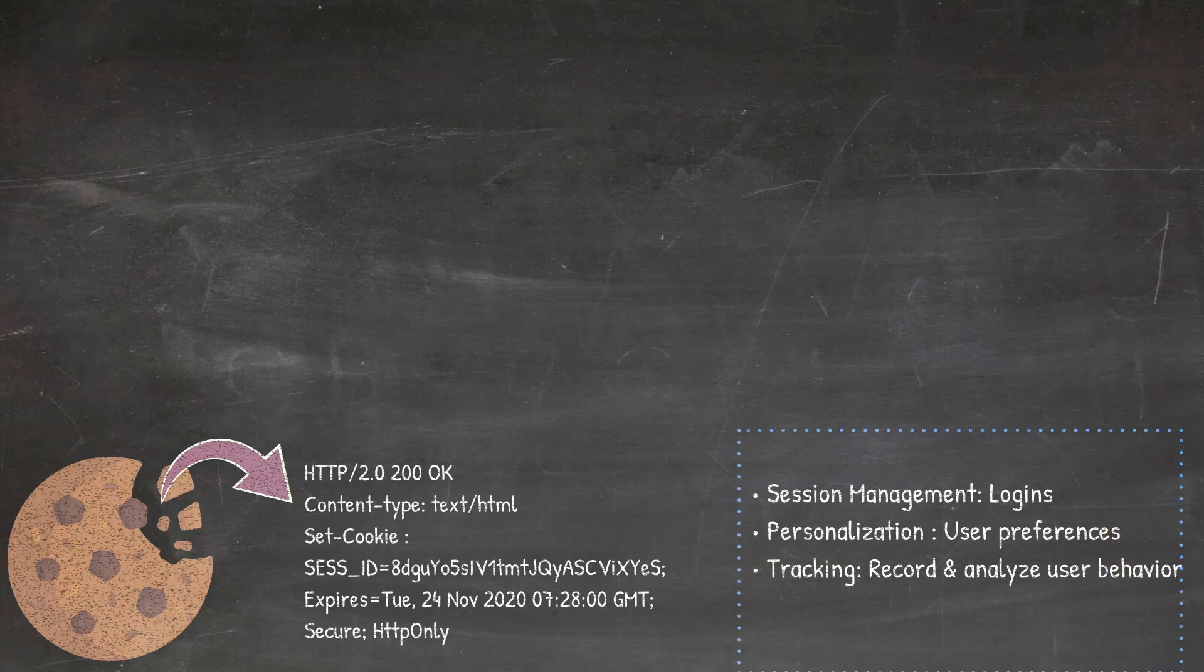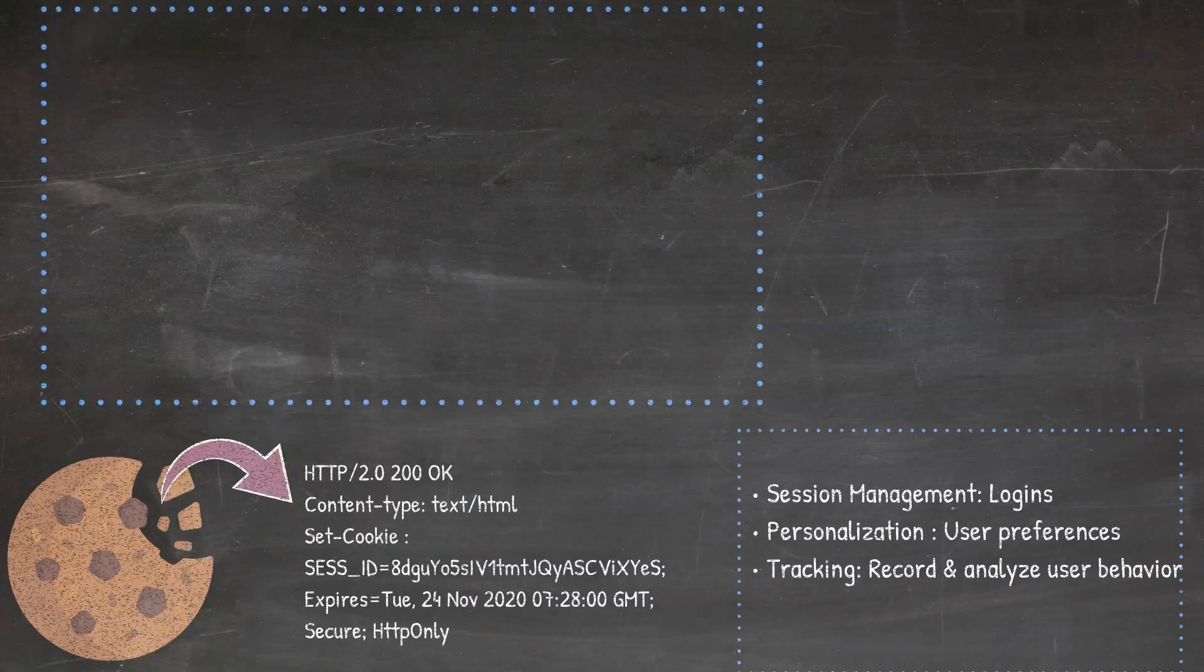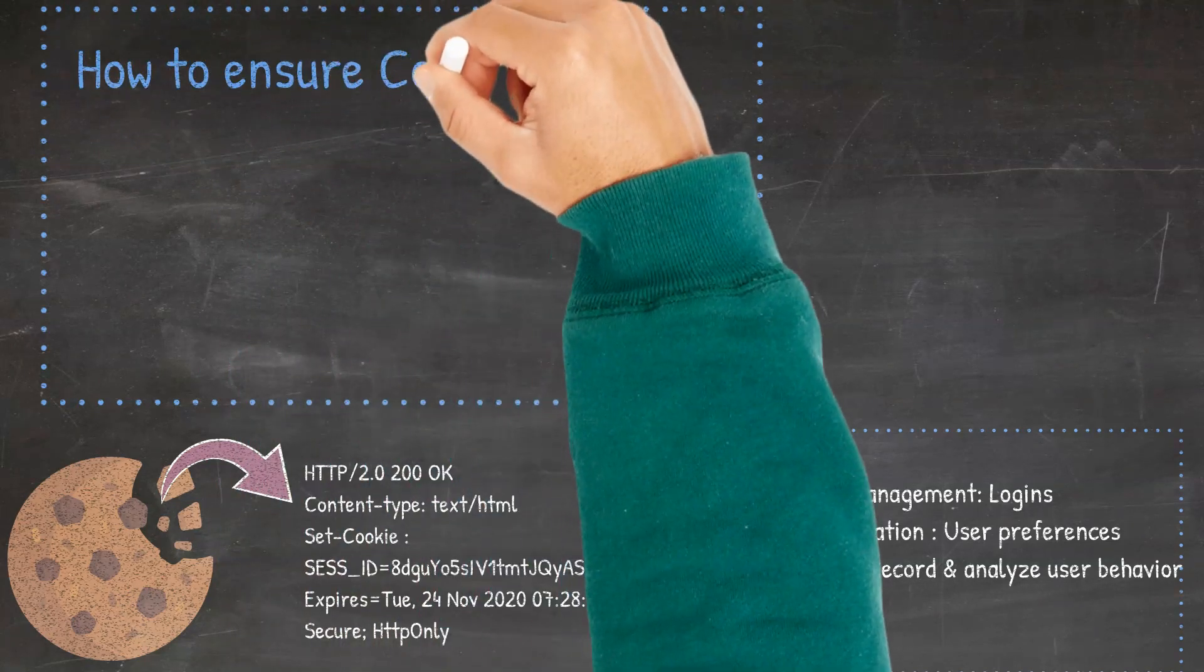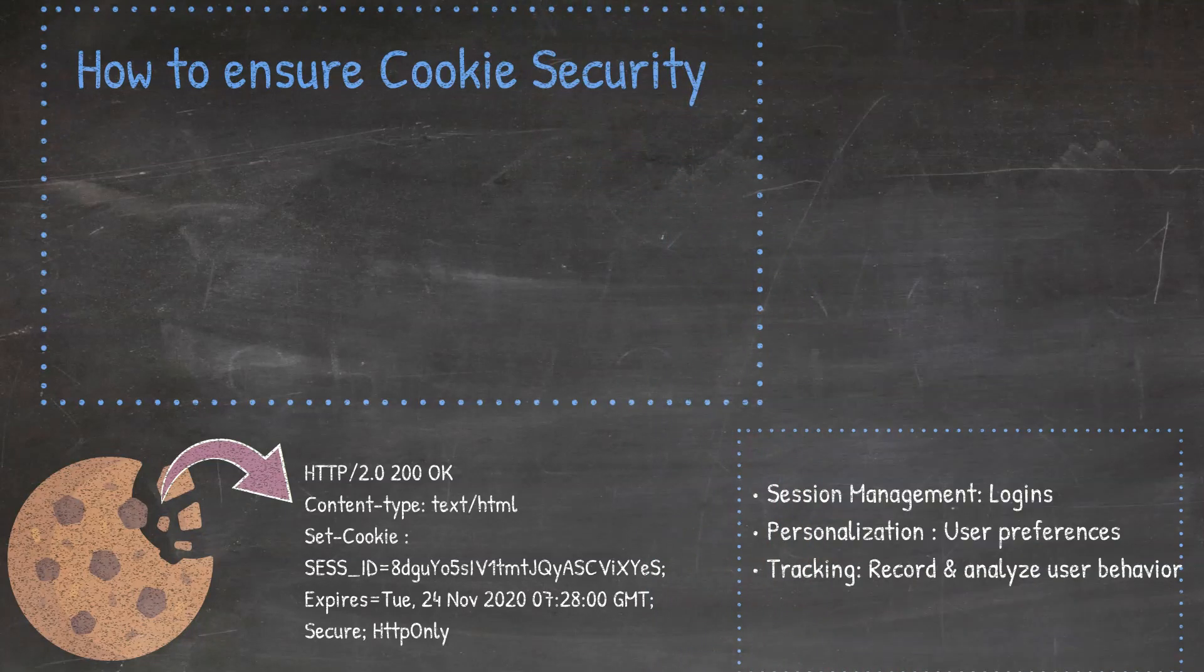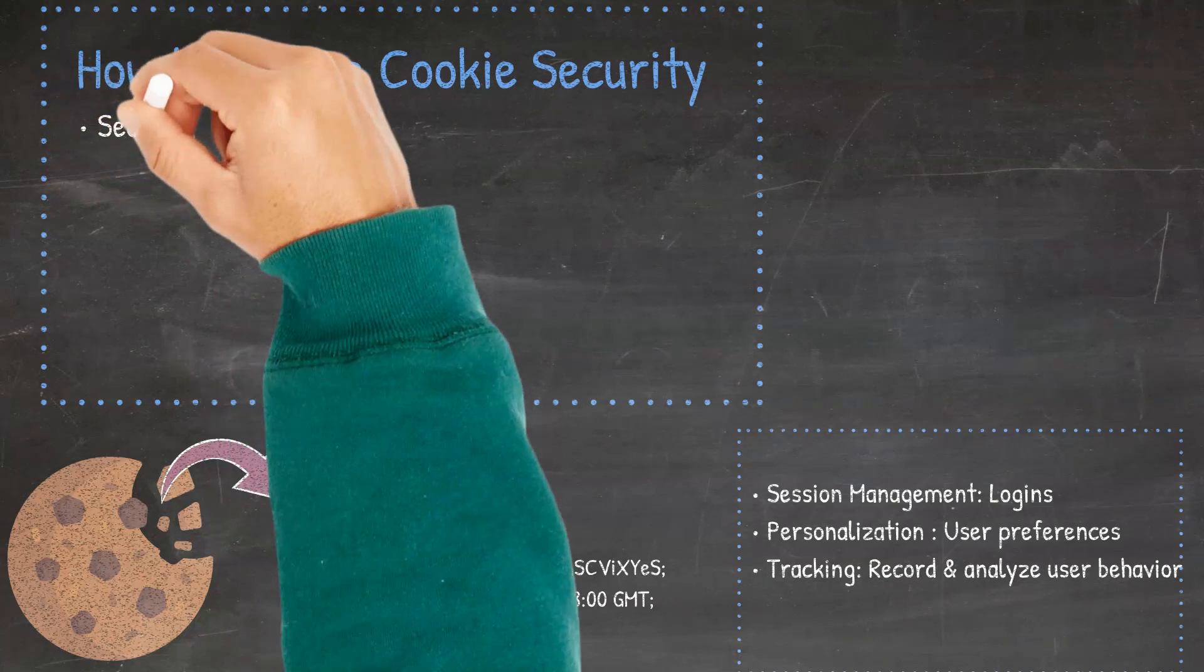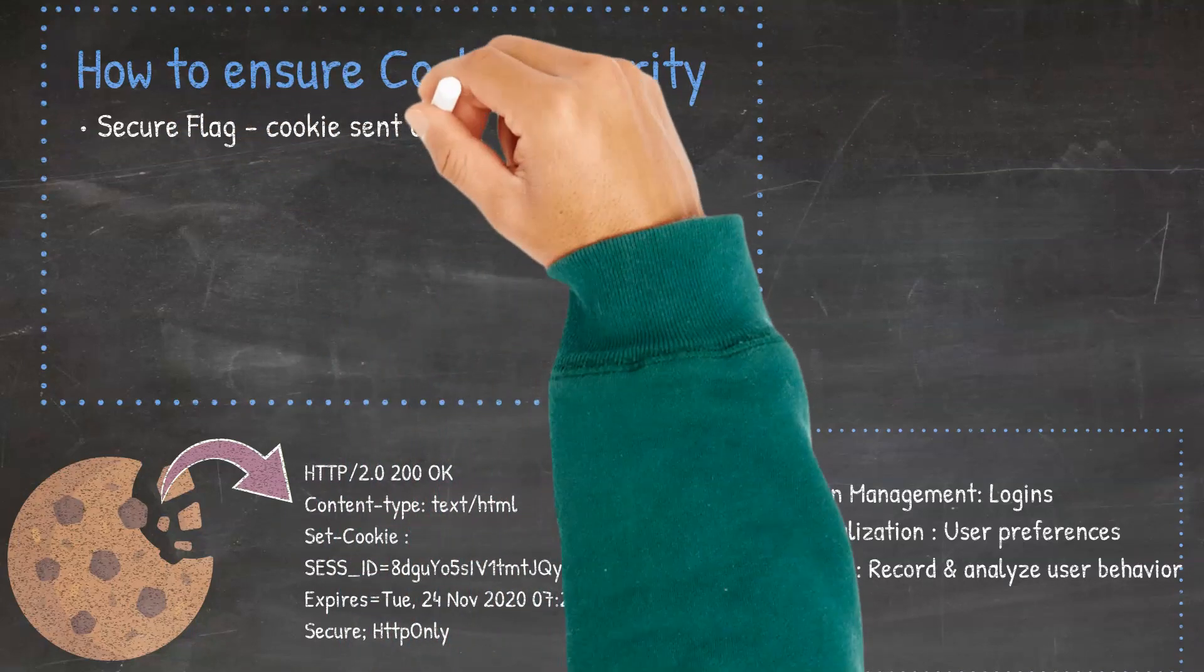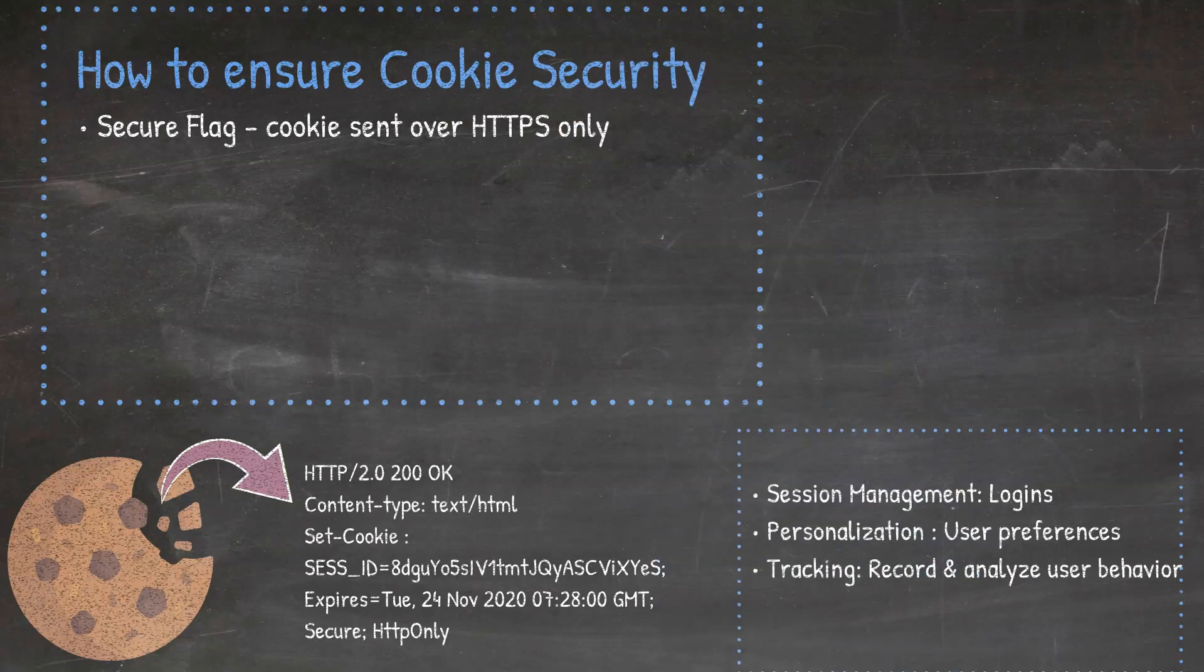How do we ensure cookie security? There are a couple of attributes or flags attached to cookies to ensure that they are sent securely and are not accessed by unintended parties or scripts. These are the secure flag, HTTP only flag, and same site flag. A cookie with a secure attribute or flag is only sent to the server with an encrypted request over the HTTPS protocol, never with an unsecured HTTP protocol, except when developing locally. This, therefore, means it can't easily be accessed by a man-in-the-middle attacker.